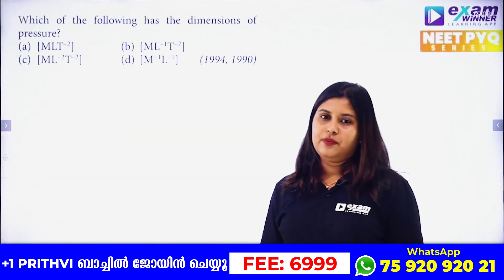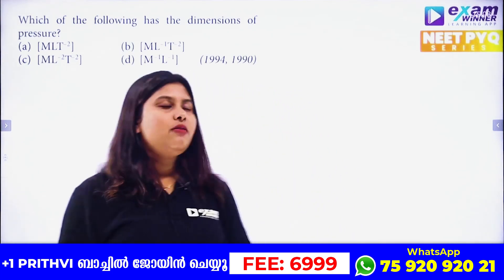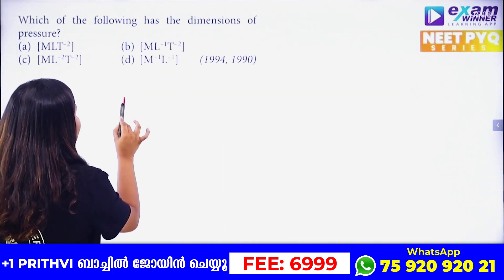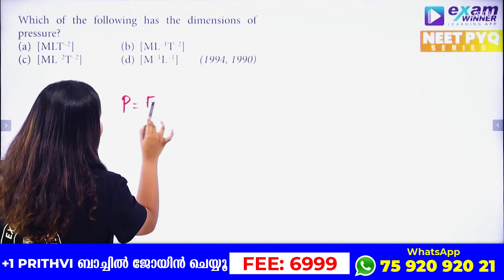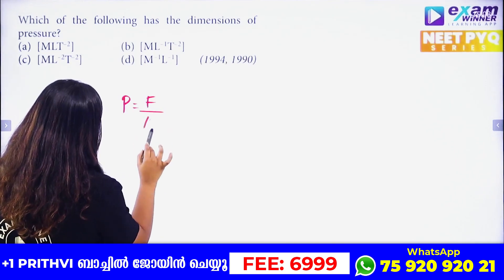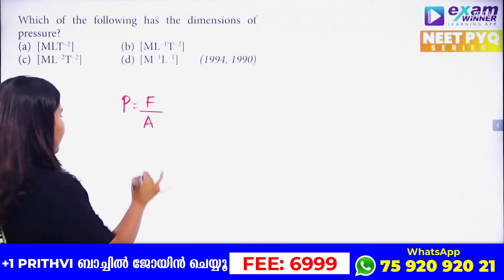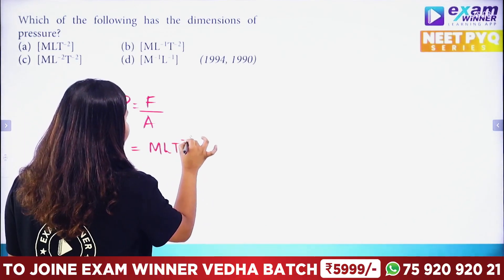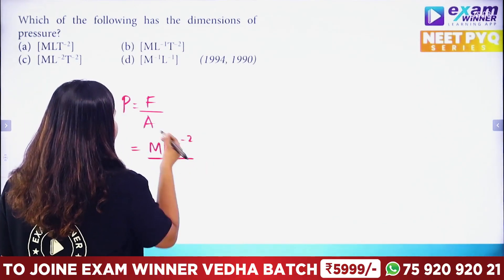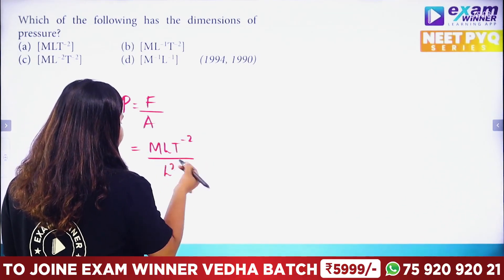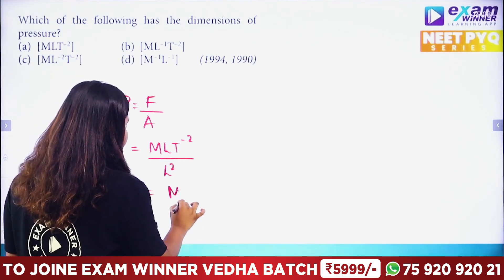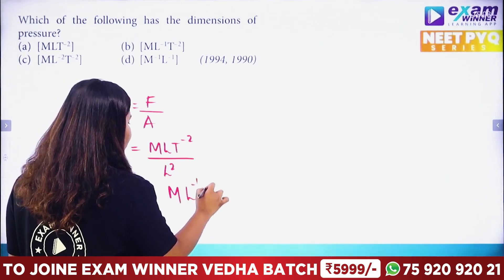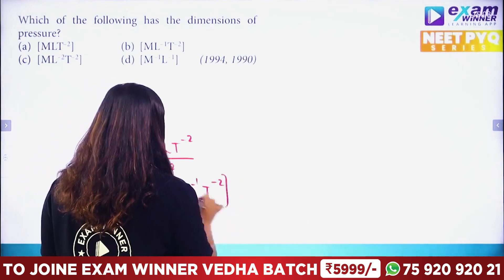What is the dimension of pressure? Pressure is force divided by area. The dimension of force is M·L·T⁻², and the dimension of area is L². Dividing, L cancels partially to give M·L⁻¹·T⁻².